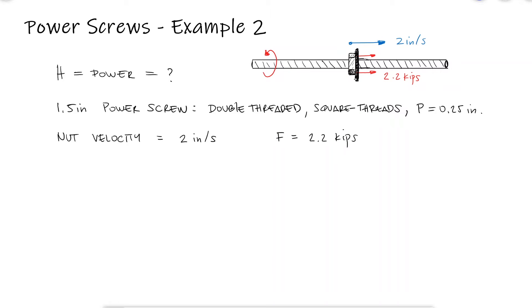The friction coefficients are 0.10 for the threads and 0.15 for the collar, meaning the friction between the rotating collar that rotates with the screw against the static non-rotating surface that is part of the larger setup. The frictional diameter of the collar is 2.25 inches.